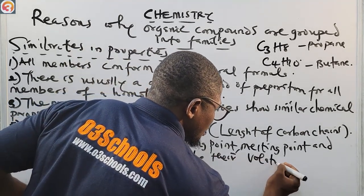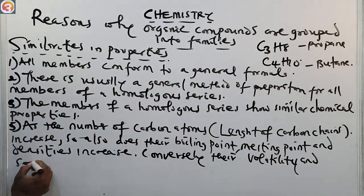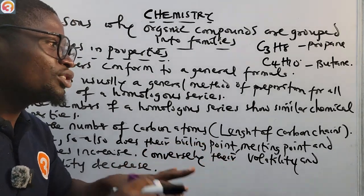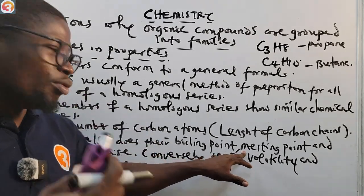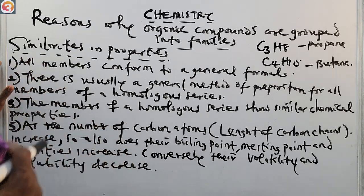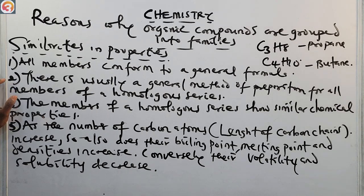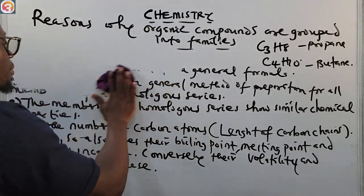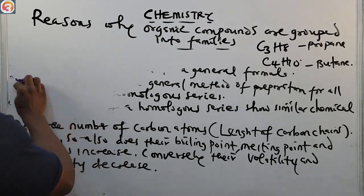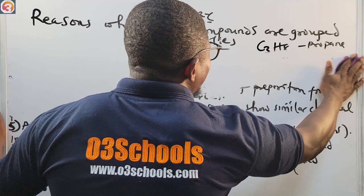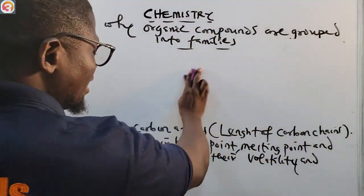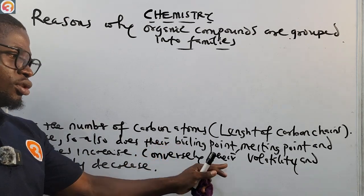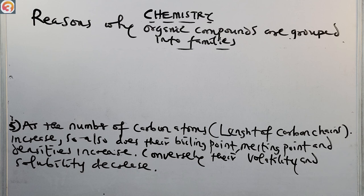Conversely, as the carbon chains increase in length, the volatility and solubility decrease. So the longer the carbon chains, the lower the volatility and solubility in water.